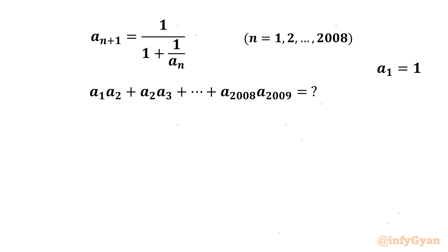Welcome back to Infigyan, my dear friends. In this video we are having one very interesting question from sequence and series. We have a_{n+1} = 1 / (1 + 1/a_n) where n is 1, 2, 3 up to 2008, and a_1 = 1. We have to evaluate the sum a_1*a_2 + a_2*a_3 + a_3*a_4 + ... + a_{2008}*a_{2009}. Let's call this sum S.